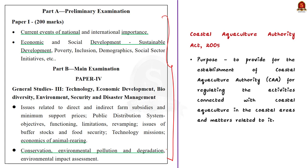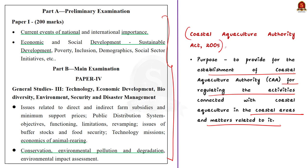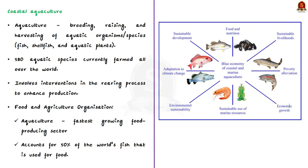The Coastal Aquaculture Authority Act 2005 is an act enacted to provide for the establishment of an authority for regulating the activities connected with coastal aquaculture in the coastal areas and matters related to it. The authority established is the Coastal Aquaculture Authority, CAA. In aquaculture, 'aqua' refers to aquatic organisms and 'culture' or culturing means breeding, rising and harvesting.